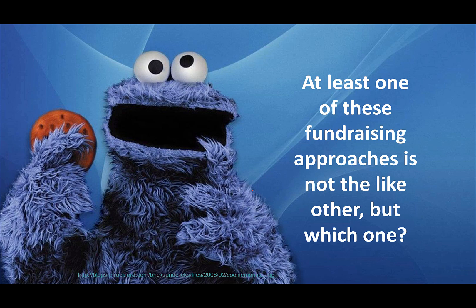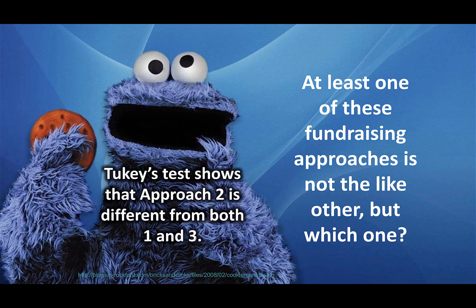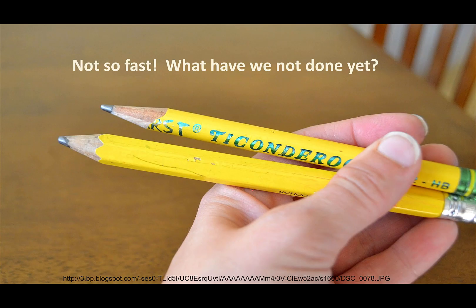So we come back to — let's call them Tukey Monster. At least one of these fundraising approaches is not like the other, but which one? Approach 2 is different from both 1 and 3, but 1 and 3 are not different from each other in the amount of money that they raise. You thought we were done, but in fact there is a Part 5 for Analysis of Variance, and it has to do with whether the data meets the assumptions that are necessary for running Analysis of Variance.